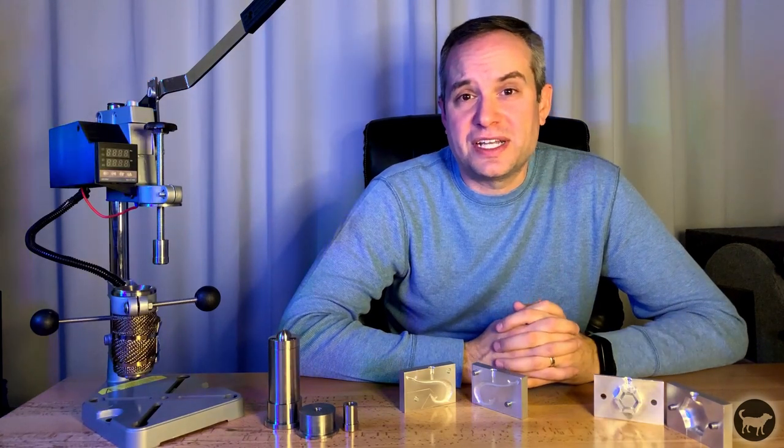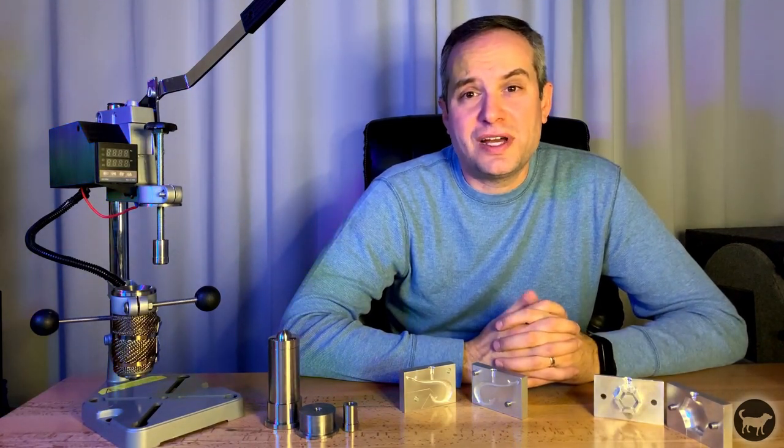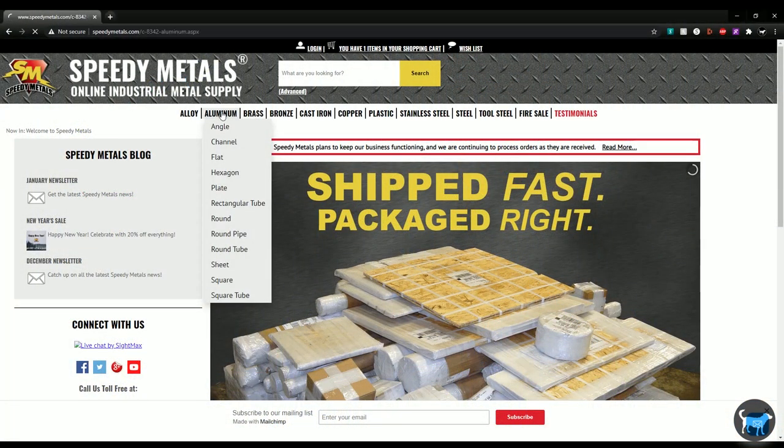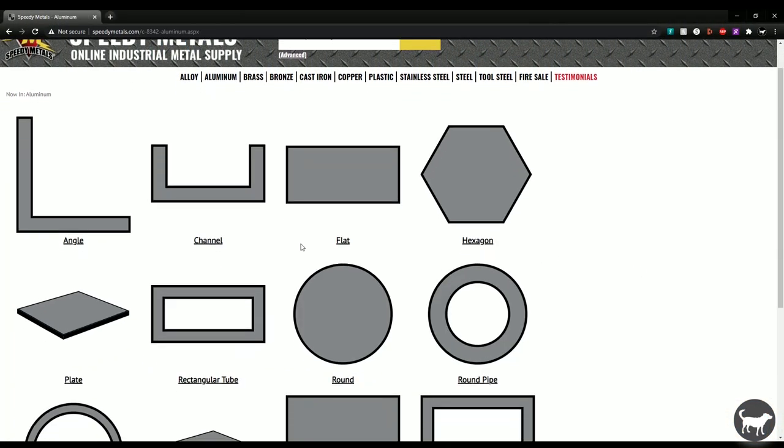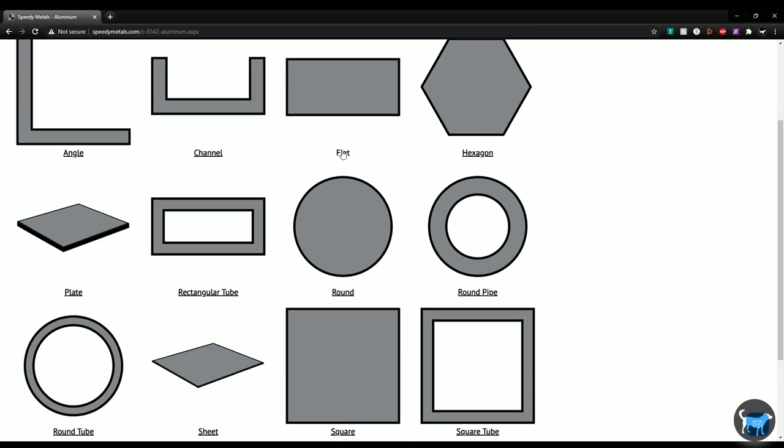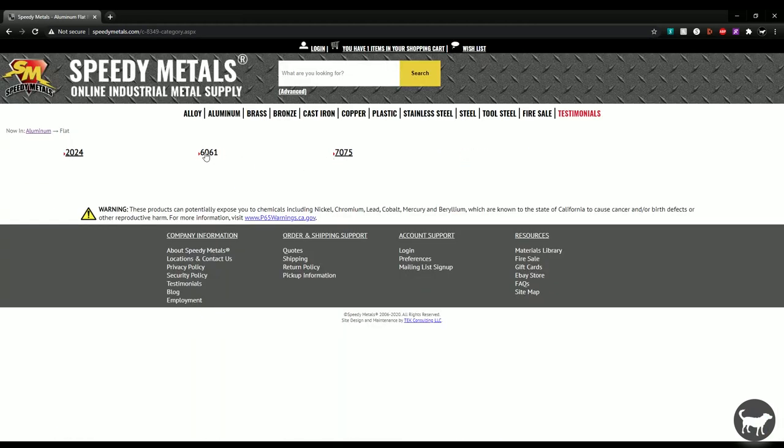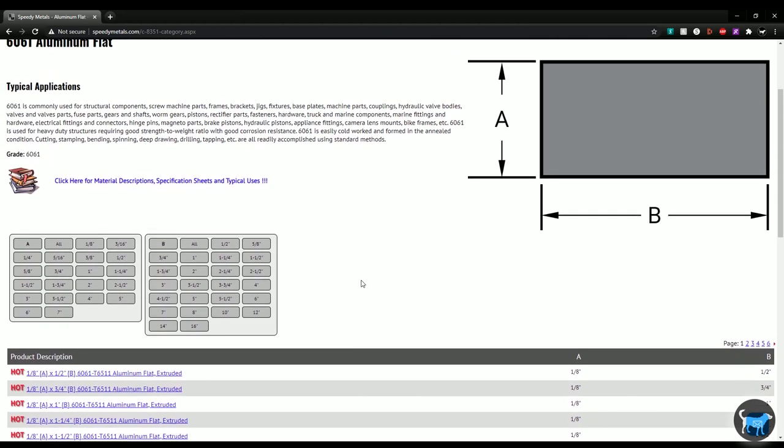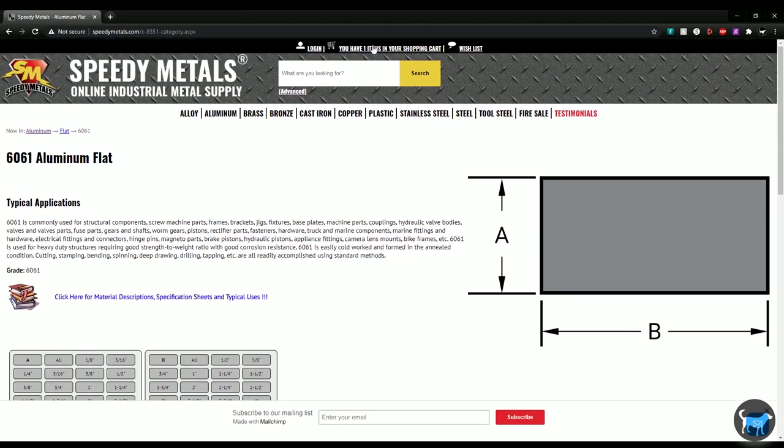I like to find the cheapest option that still functions properly, so I like to use a company called Speedy Metals to source my aluminum. You go to their site, pick aluminum, choose flat, I then choose 6061 aluminum and choose the size I want. I find that 2 by 3 inch, half an inch thick is a great size for a mold half from this machine.